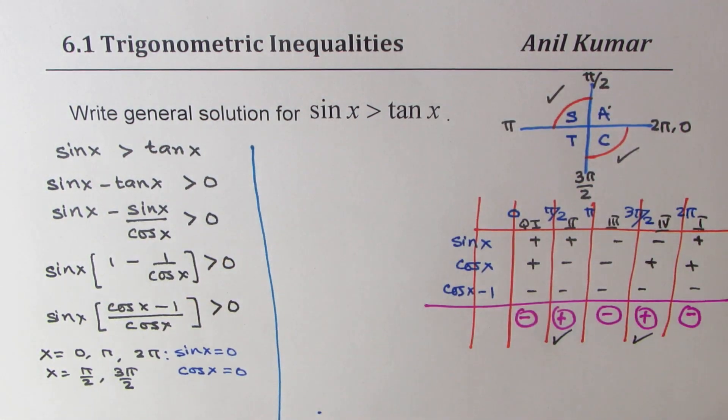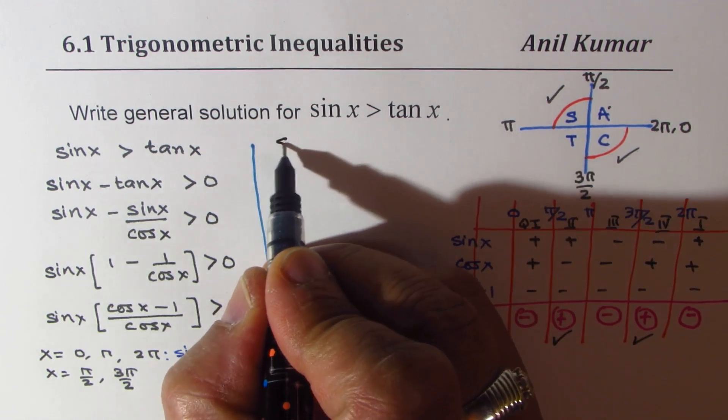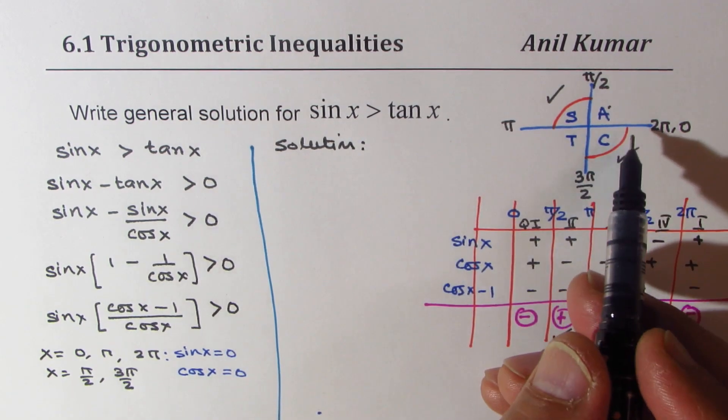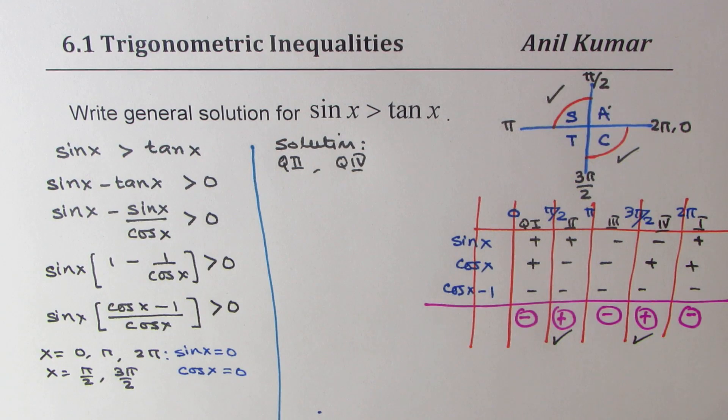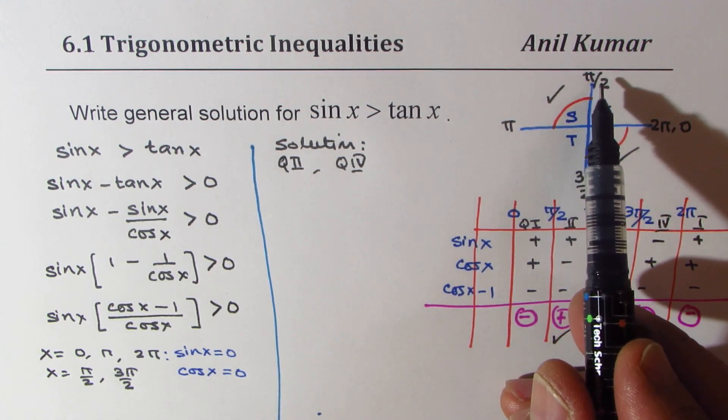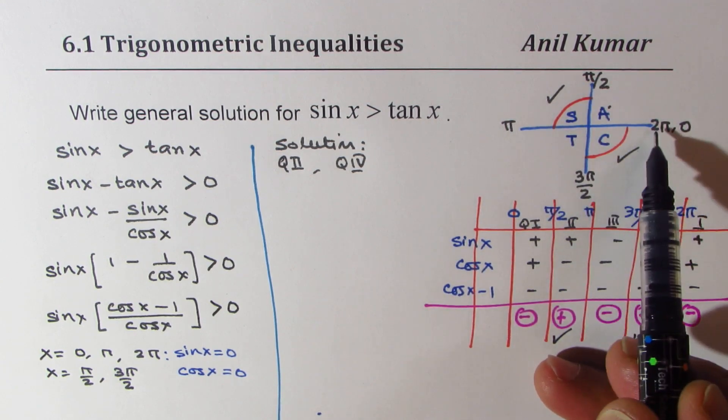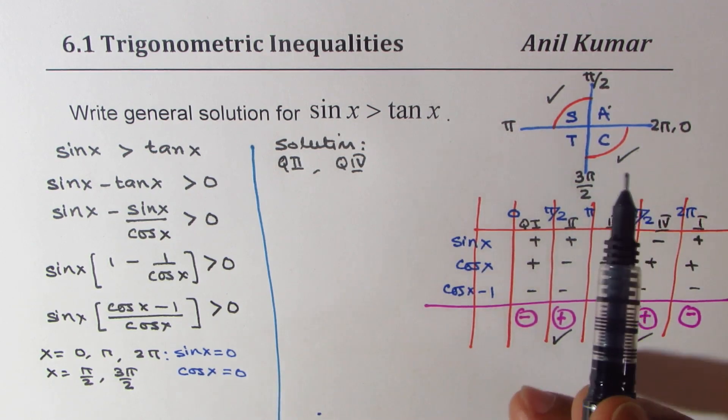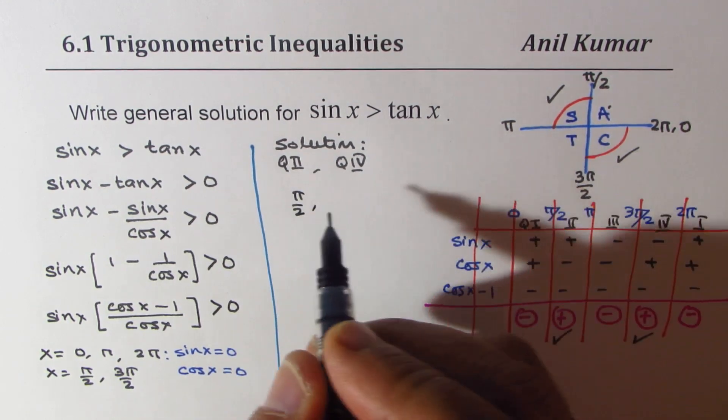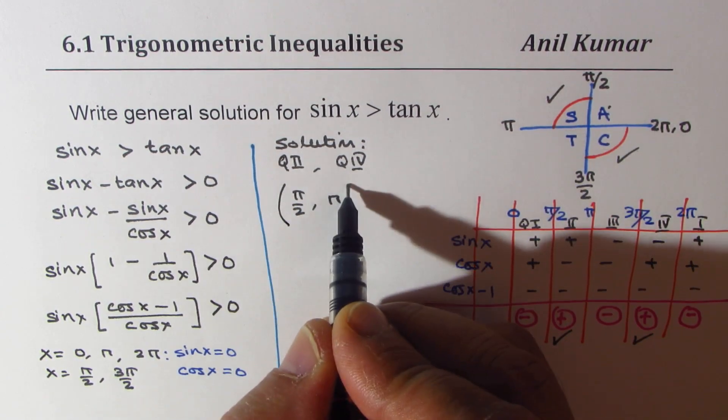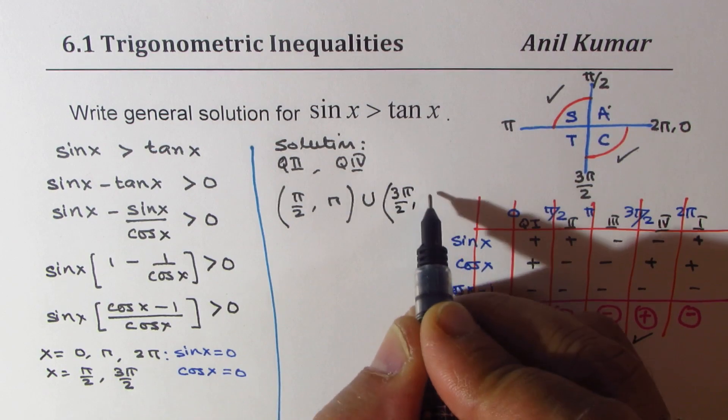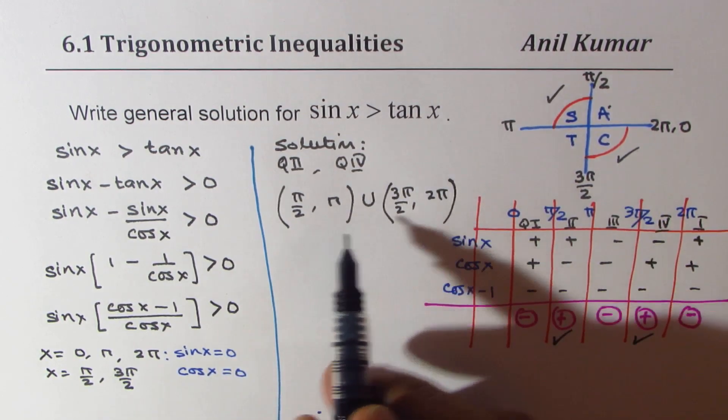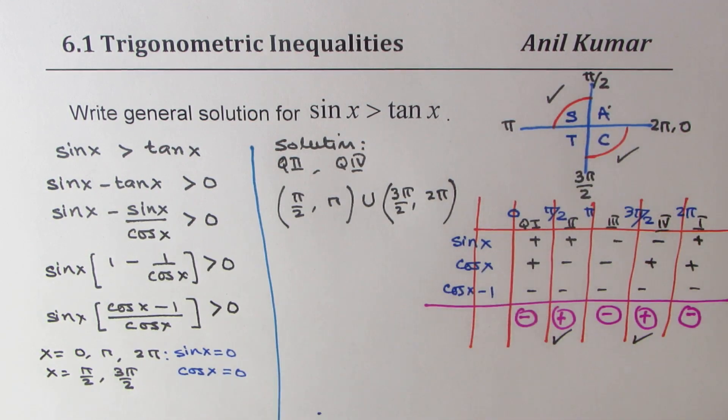Whether you do with logic or with table of values in the interval form. So the solution is, basically, it is quadrant 2 and quadrant 4. Now, the general solution, that is a critical thing. How do we write pi by 2 to pi and 3 pi by 2 to 2 pi in a general form? So basically, it is from pi by 2 to pi. And then, we have union from 3 pi by 2 to 2 pi. So this is the solution in 0 to 2 pi interval. The question is, how to provide general solution.